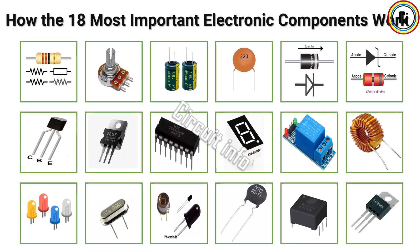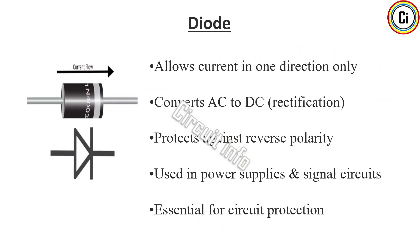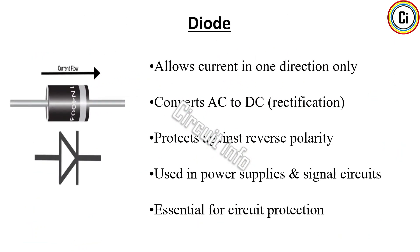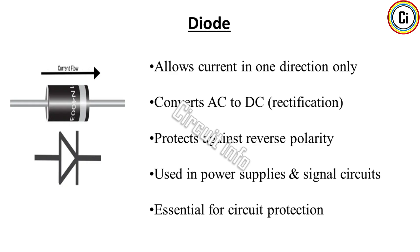A diode is a semiconductor device that allows current to flow in only one direction, much like a one-way valve for electricity. This property makes it vital for converting AC to DC in power supplies, preventing reverse polarity, and protecting sensitive components from voltage spikes. Diodes are used in rectifiers, signal demodulation, and voltage regulation circuits. Small in size but powerful in function, they are essential for ensuring proper current direction in everything from chargers to large industrial machines.